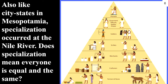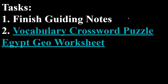Also, just like the city-states of Mesopotamia, specialization occurred at the Nile River. Does that mean specialization equates to equality for everyone? Absolutely not. You had a social class set up in Egypt, just like almost anywhere else in the world, where you had certain talents, certain roles, certain skills. The more rare and useful your skill, the higher up in the upper class you'd be. So if you were a scribe — able to read and write — most people back then weren't able to do that, so you'd be higher up in society. If you lacked talent or just had bad luck, you'd end up a poor farmer.